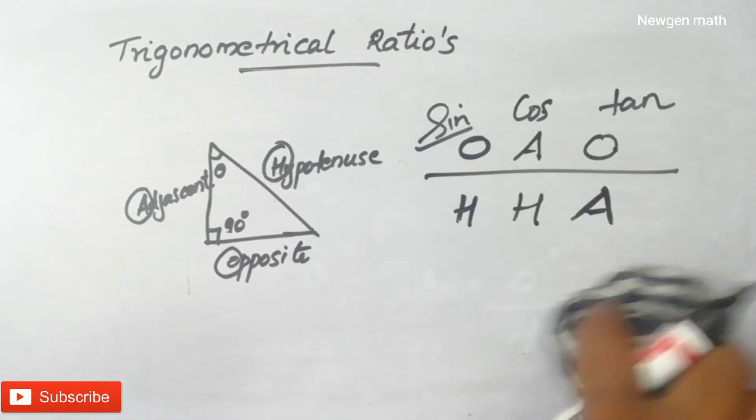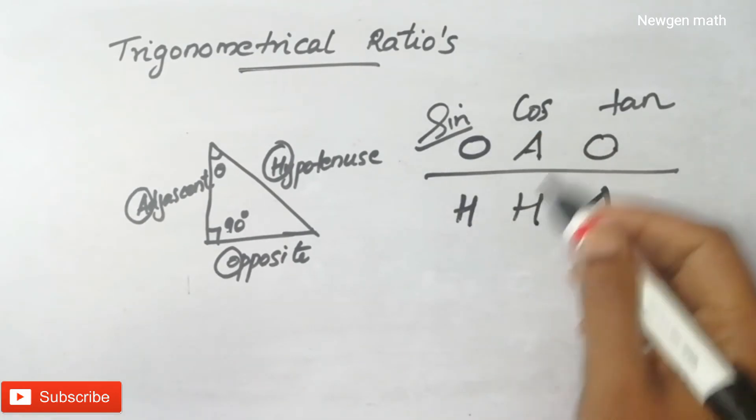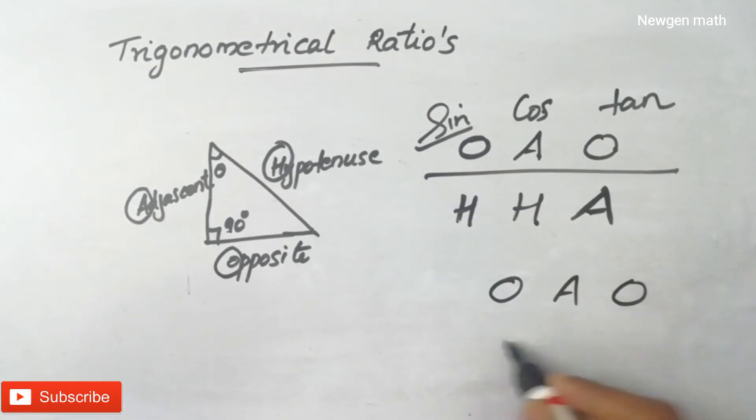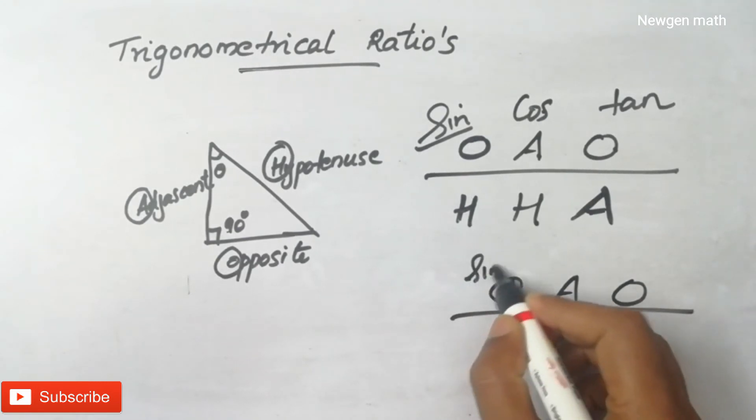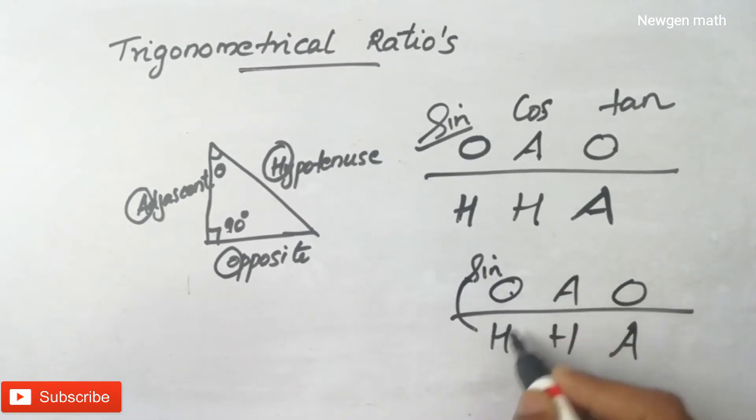This is the trigonometric ratio. Sine, cosine, tangent means O, A, O, H, H, A. Sine is the opposite side by hypotenuse. Cosine is the adjacent side by hypotenuse. Tangent is the opposite side by adjacent side.